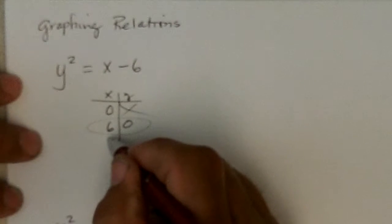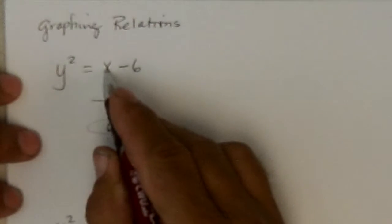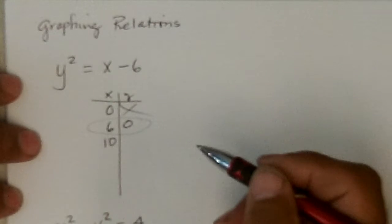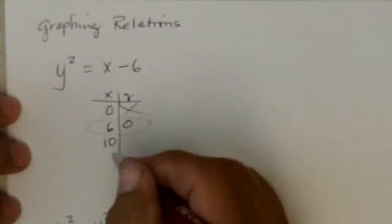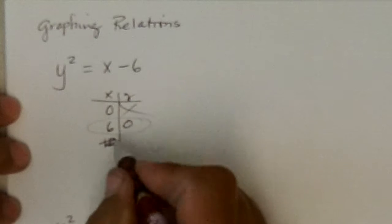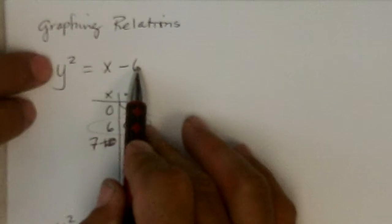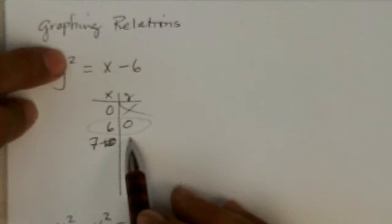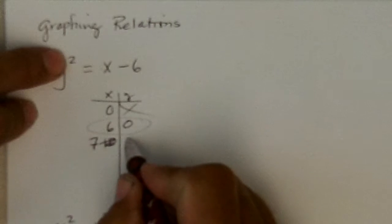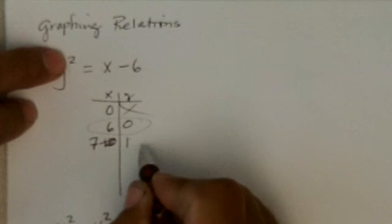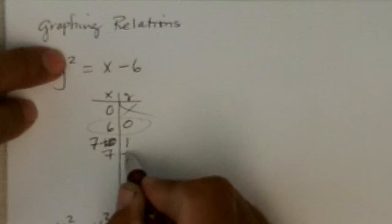If we put in, let's see, I'm going to put in 10 next, and you'll see why. Let's do 7 first. 7 minus 6 is 1. What squared is 1? Well, that would be 1, or negative 1.